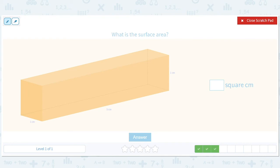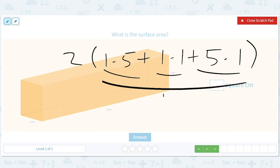Okay, so 1 times 5 plus 1 times 1 plus 5 times 1, all times 2. This gives us 5 plus 1 plus 5. That all gives us 11 times 2, is 22.